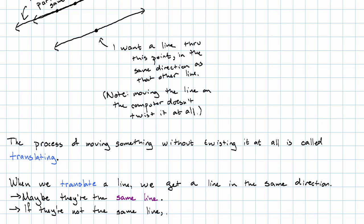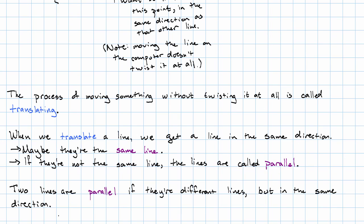They're in the same direction, but they're different lines. They're called parallel. So to put it another way, two lines are called parallel if they're different lines, but in the same direction.